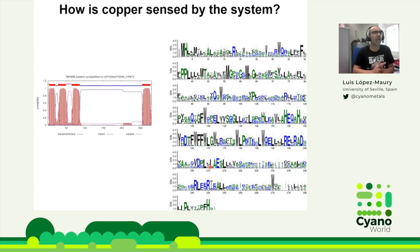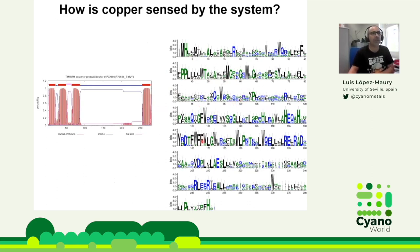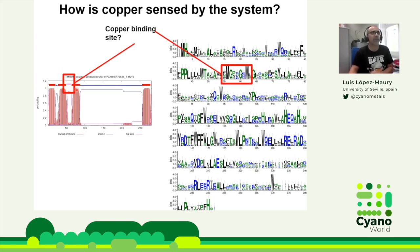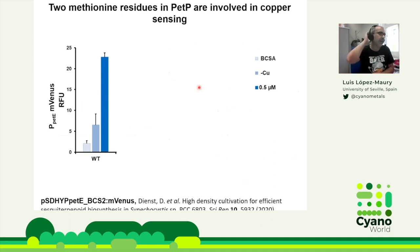We then analyzed all PETP sequences from cyanobacteria — around 160 sequences — and found a few amino acids completely conserved across all of them. Two stood out as a possible copper-binding site: two methionines that were completely conserved and located in a periplasmic domain of the protein. To test whether these methionines were involved in copper sensing, we generated the set of mutants and introduced them in Synechocystis, assessing PETP promoter activity using a reporter gene YFP under PETP promoter control.